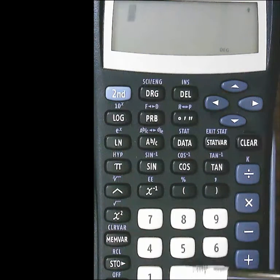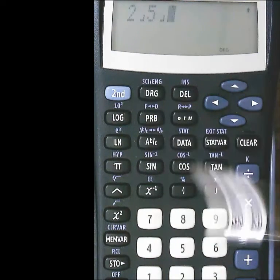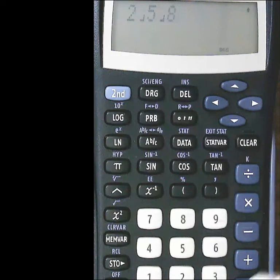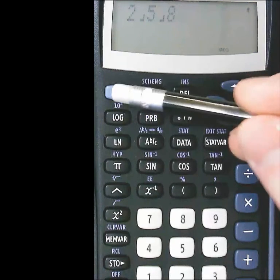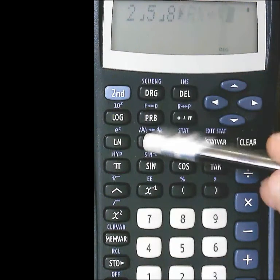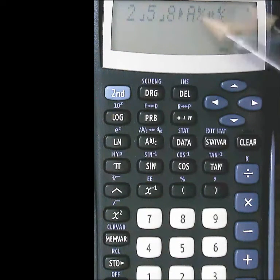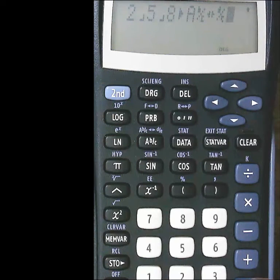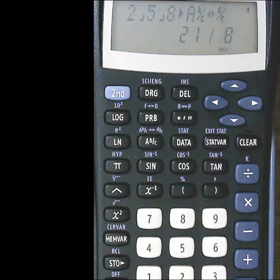So if we would have, say, 2 and 5 eighths, I could do 2, fraction key 5, fraction key 8. You could press equals if you wanted to. But I'm just going to go right to that second and then my fraction key. So it's going to take this and change it between a mixed number and an improper fraction. Hit equals. So 2 and 5 eighths is the same as 21 over 8.